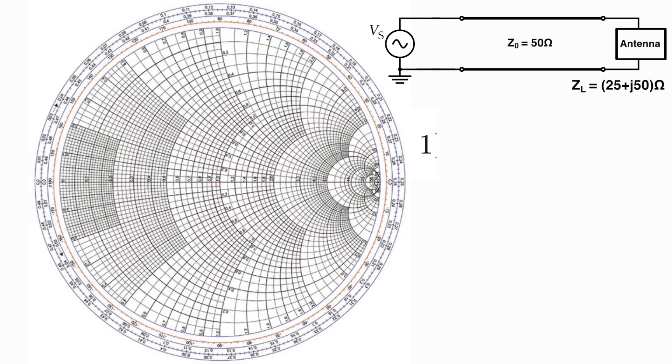Anyway, step one with the Smith chart is to take your load impedance and divide it by the transmission line impedance. Then you take the real part of that and find that value on the horizontal axis. Hard to read, but 0.5 is right here, which is on this circle, which we're going to highlight. Again, these circles are all of constant normalized resistance that all correspond to the real component.